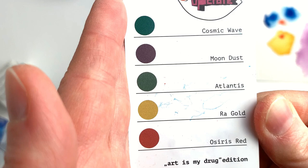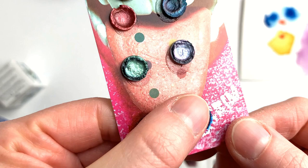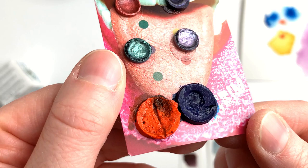The shimmery colors are Cosmic Wave, Raw Gold, Moondust, Osiris Red and Atlantis. I couldn't find pigment info on these either. On their website Scrim mentioned that their paints are generally vegan but no more details are given.